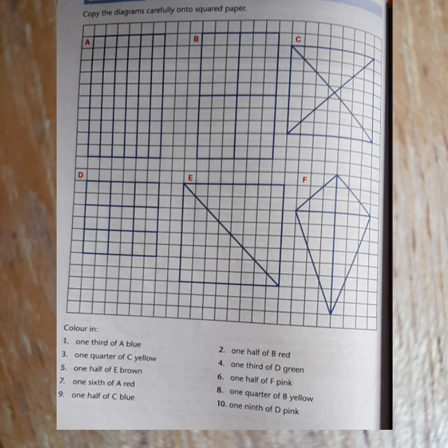And then you have to do what question one asks you to do. So question one says color in one-third of A blue. You've got to look at that rectangle and see where is one-third and color that in. Then you've got to color in for number two, one-half of B red; for number three, one-quarter of C yellow, and so on and so forth.